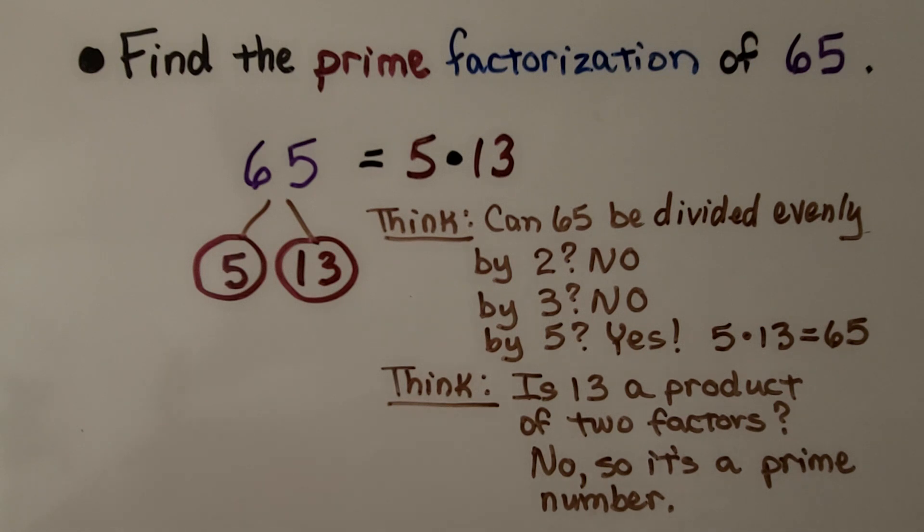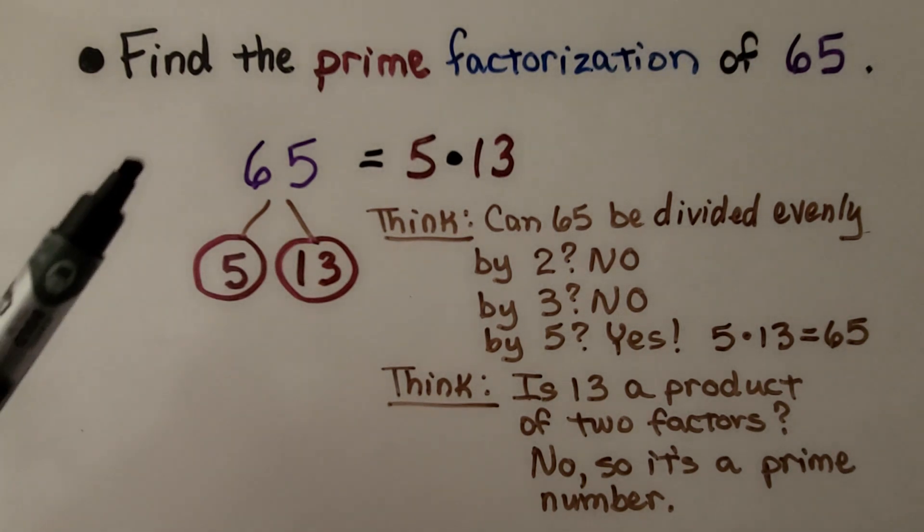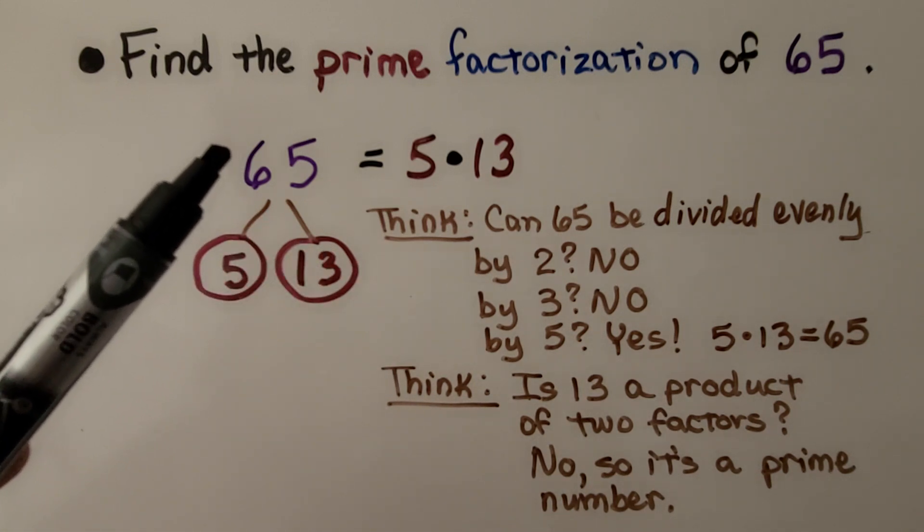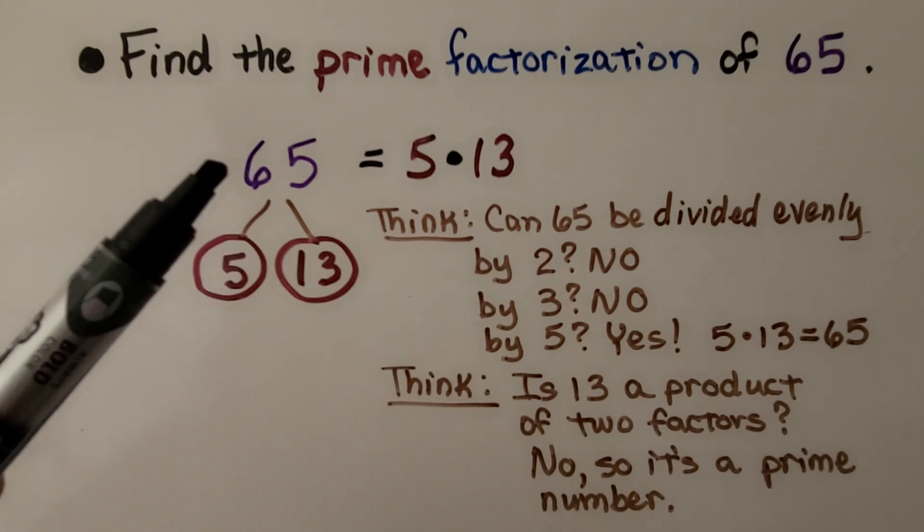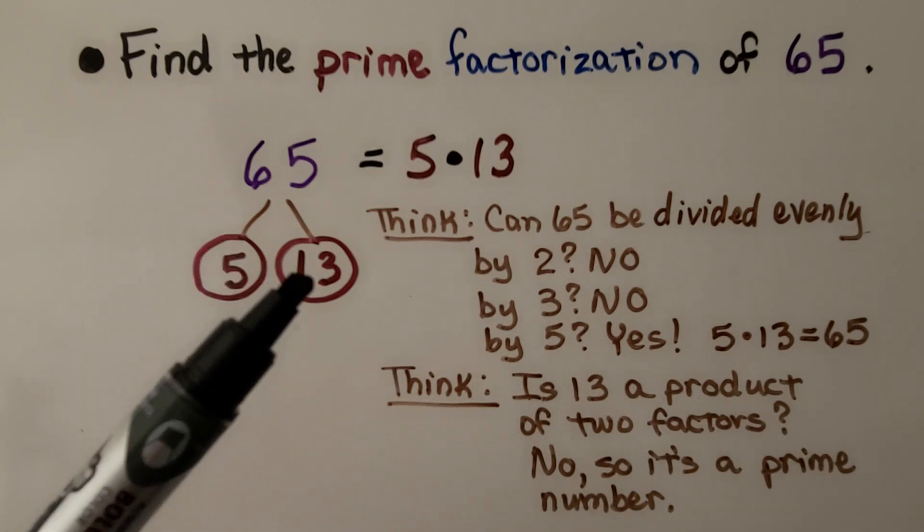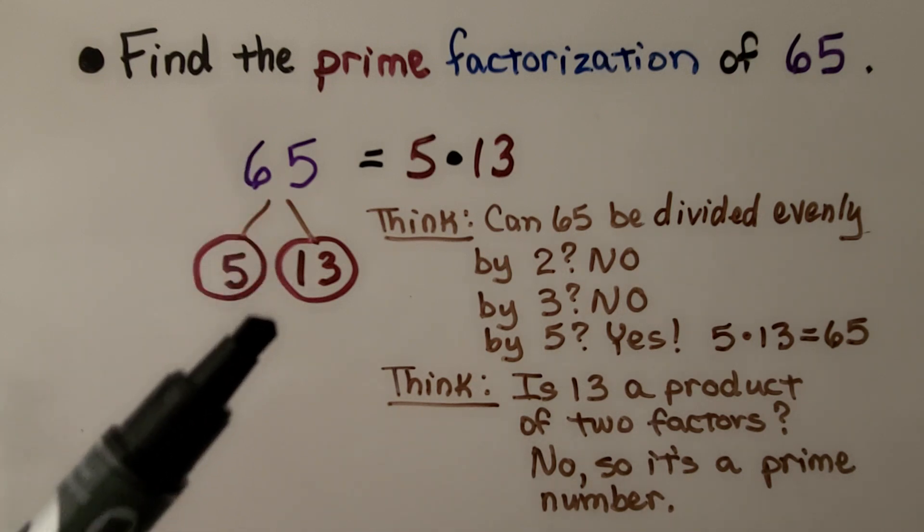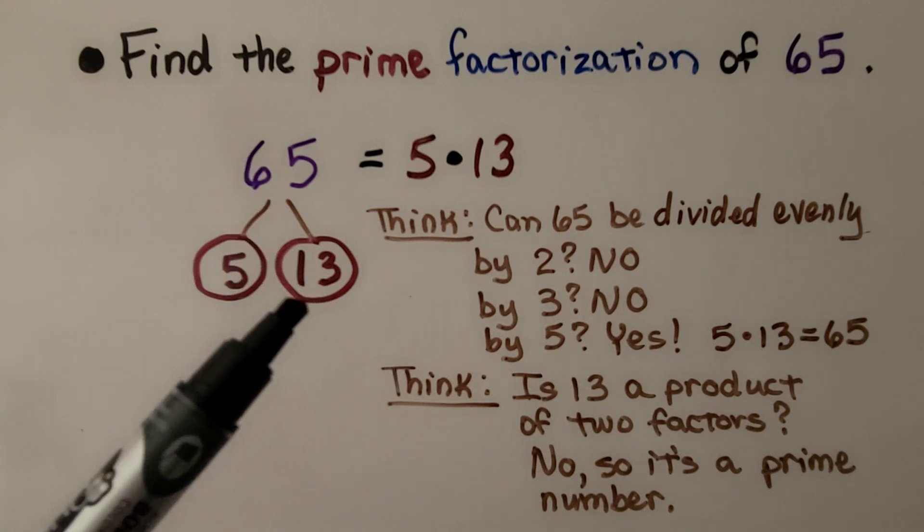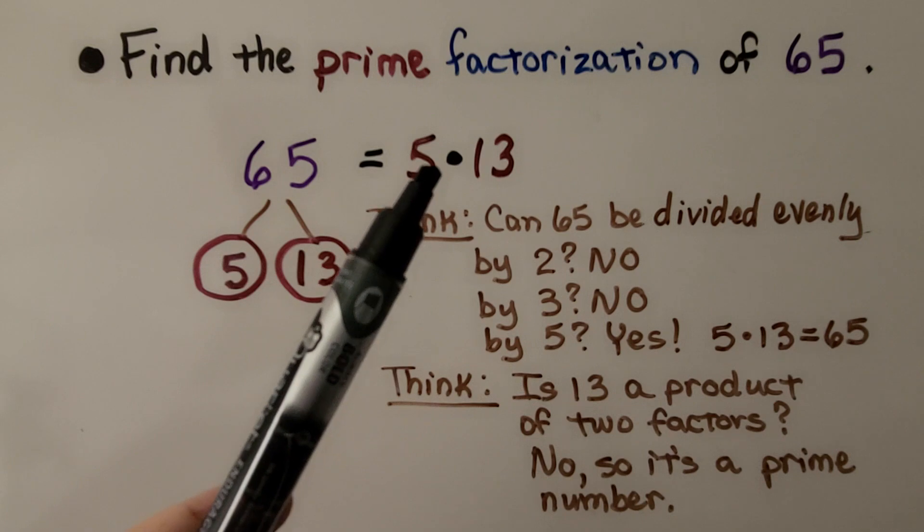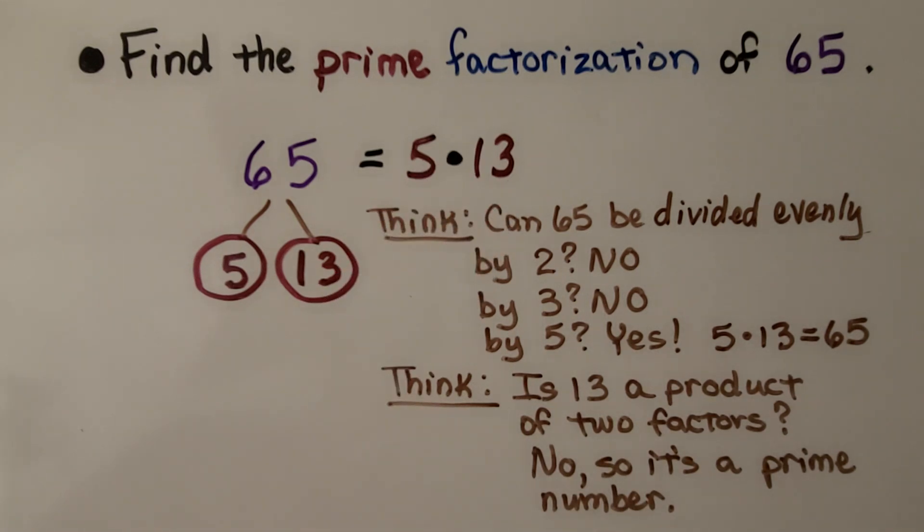It's telling us to find the prime factorization of 65. And we think, can 65 be divided evenly by 2? No, it can't because of that 5. Can it be evenly divided by 3? I know that 5 times 12 is 60. 5 times 13 is 65. Is 13 a product of two factors? No, 13 is prime, so our prime factorization of 65 is 5 times 13. So we won't always have exponents when we find the prime factorization of a number.